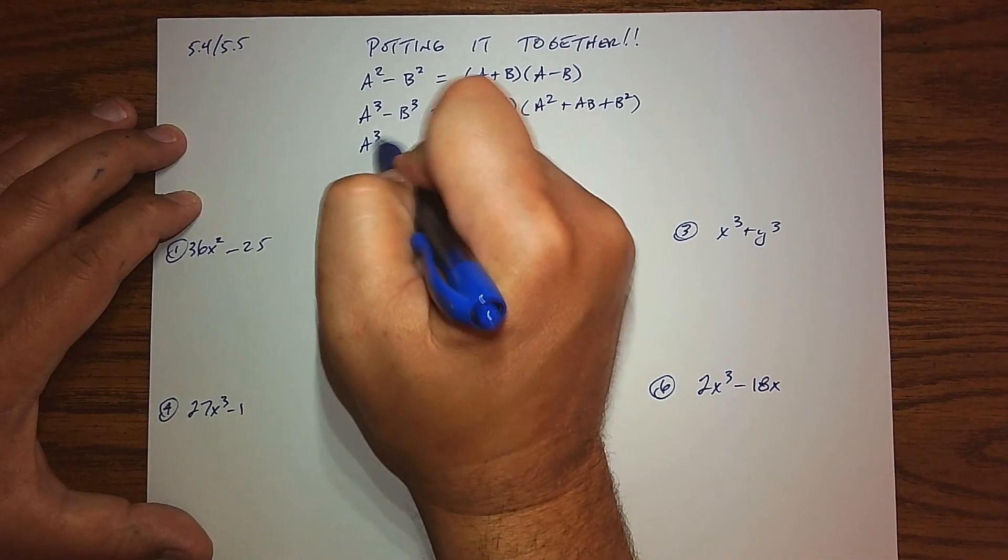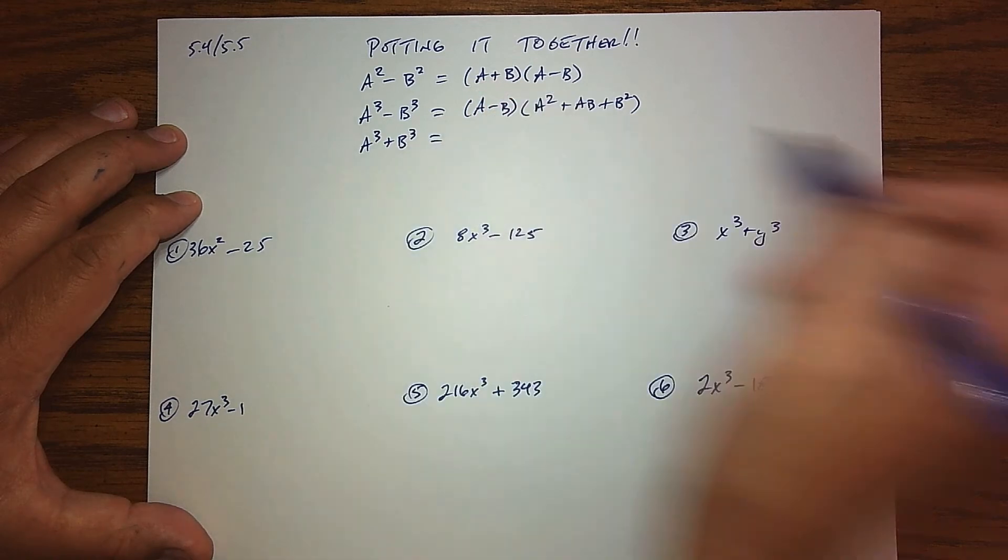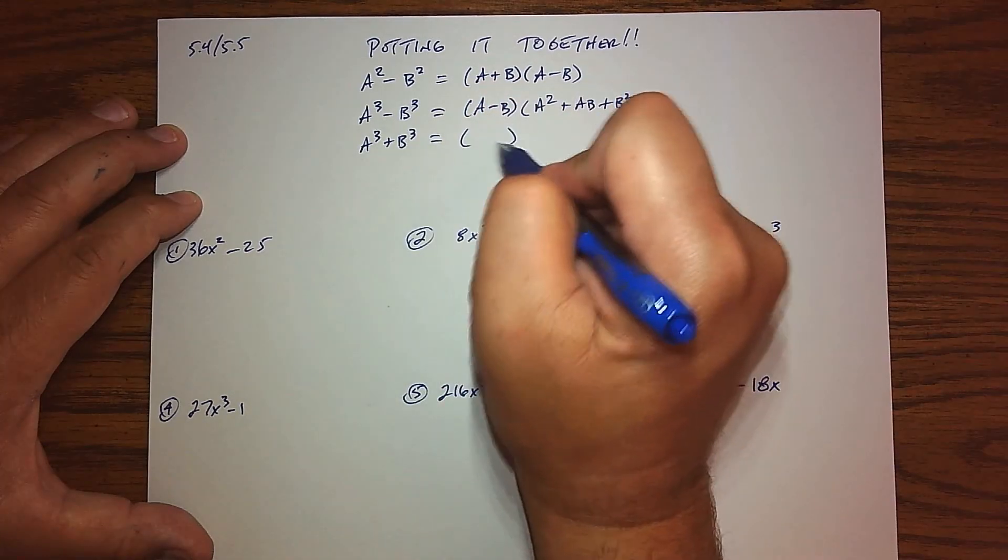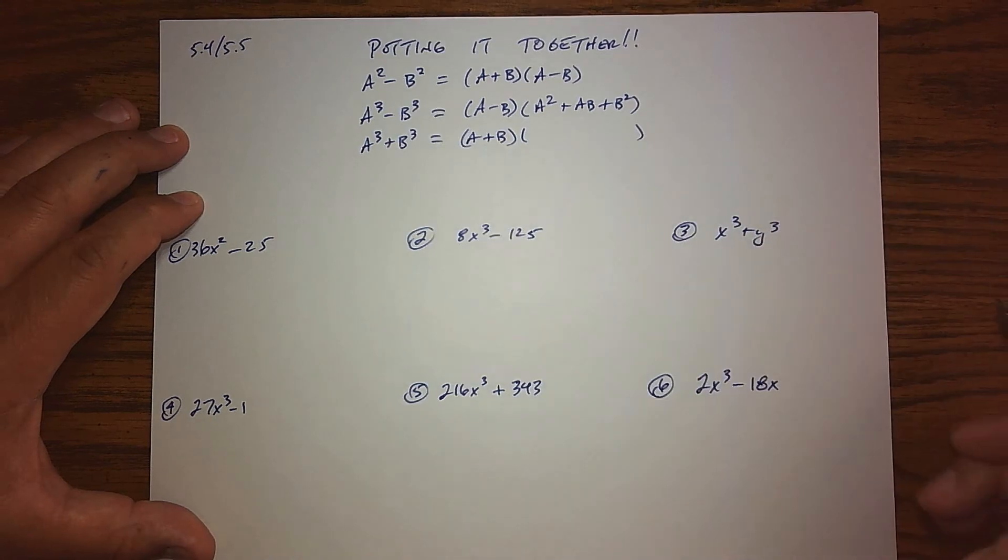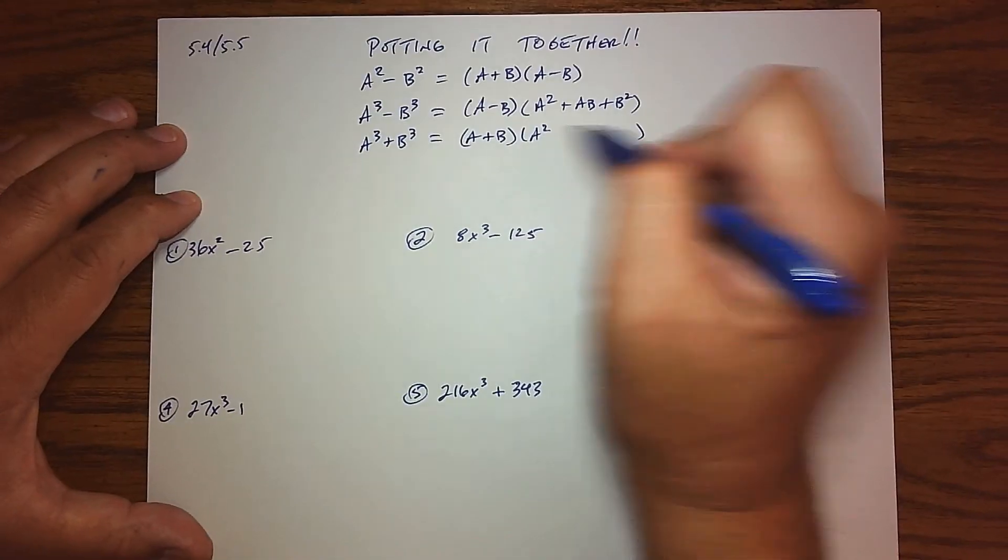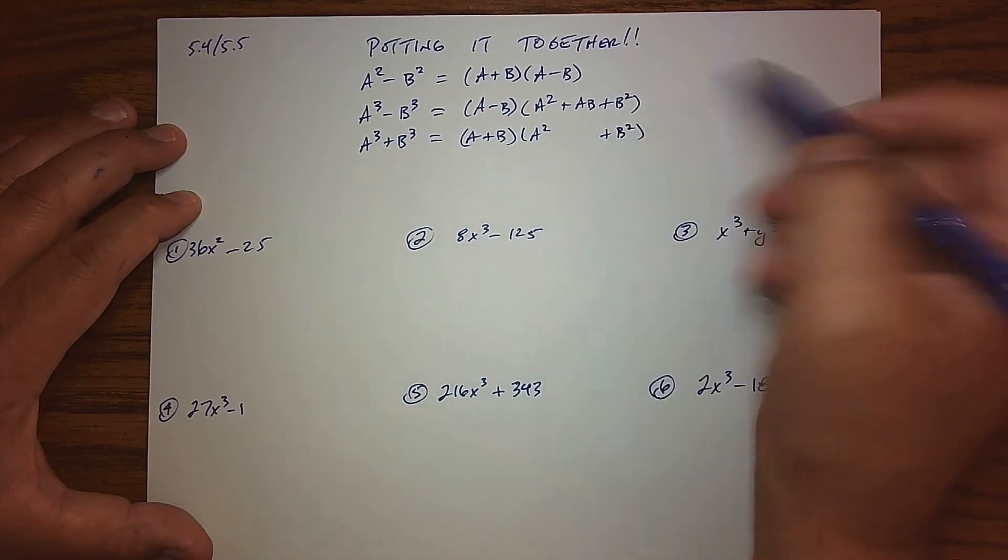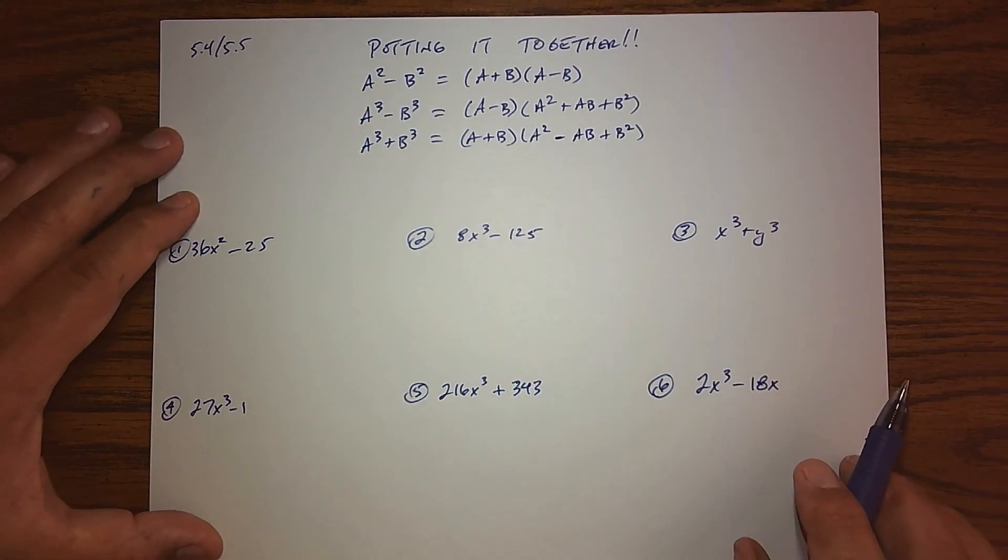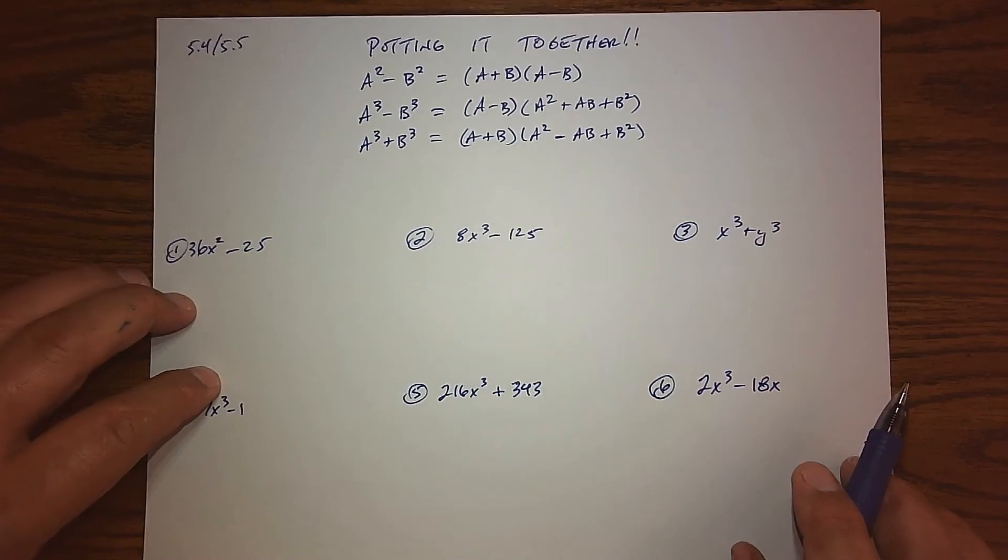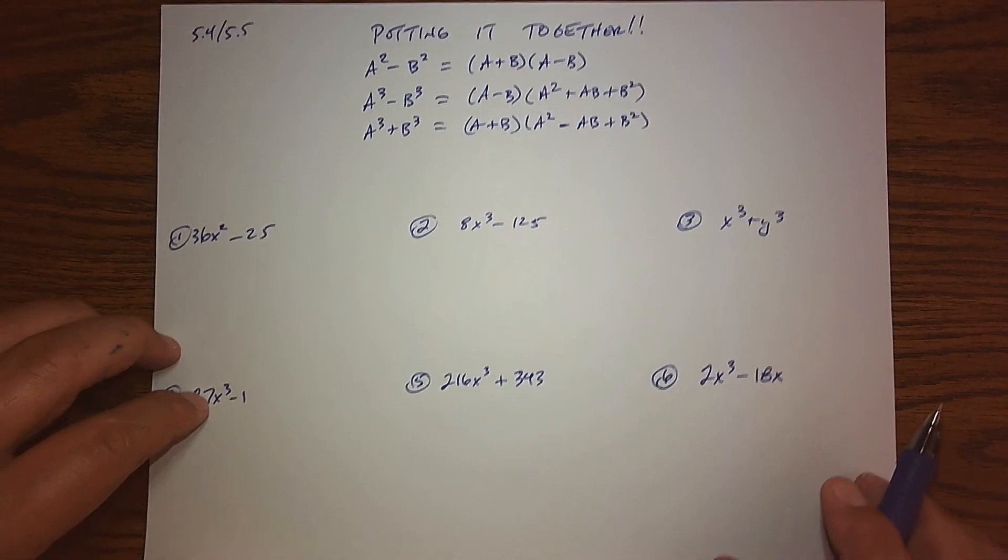And then there's the sum of cubes where it's very similar, but this time we take the bases and we add them—that's in the binomial—and then in the trinomial, first term squared, second term squared, we subtract their product in the middle. So there's basically the patterns we learned. Now let's go see where they apply and apply them.